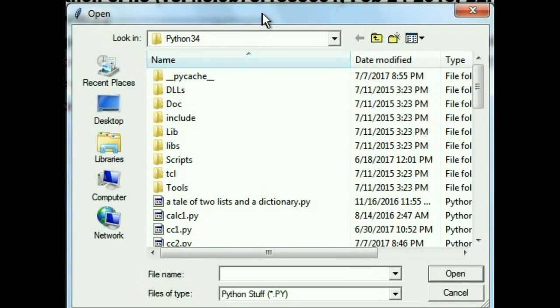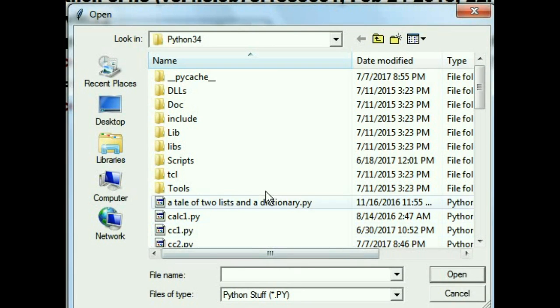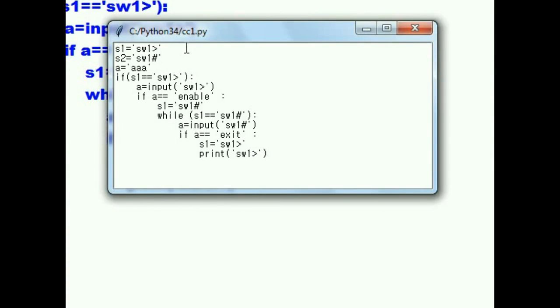And kapow, up comes our dialog box. And I'm going to look through here. I got python stuff, star.py. And I got all file stuff. Let's go to the python stuff. That ends with a .py. And there's one, cc1. That's a short file. cc1.py. I just clicked on it. I'm going to click on open. And oh, there we go. It put c colon python 34 slash cc1.py into the title bar. And it put the contents of that file right into the text box, just like we told it.